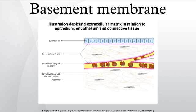The basement membrane is also essential for angiogenesis. Basement membrane proteins have been found to accelerate differentiation of endothelial cells. The most notable examples of basement membranes are the glomerular basement membrane of the kidney — formed by the fusion of the basal lamina from the endothelium of glomerular capillaries and the podocyte basal lamina — and between lung alveoli and pulmonary capillaries, formed by the fusion of their respective basal laminae, which is where oxygen and CO2 diffusion occurs.